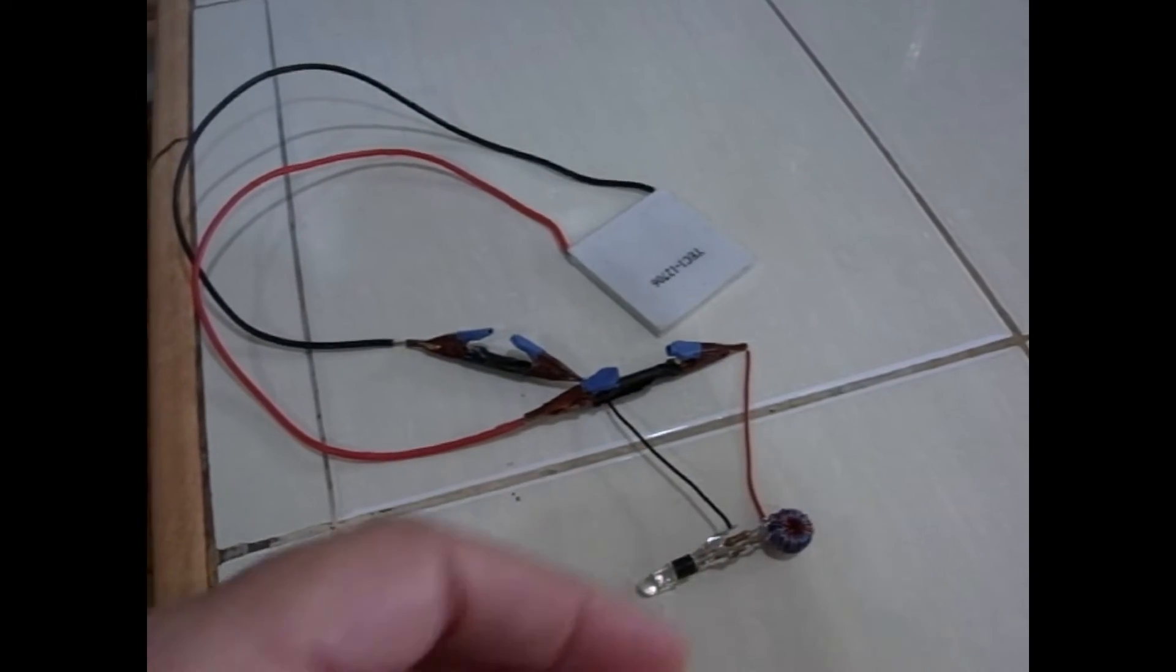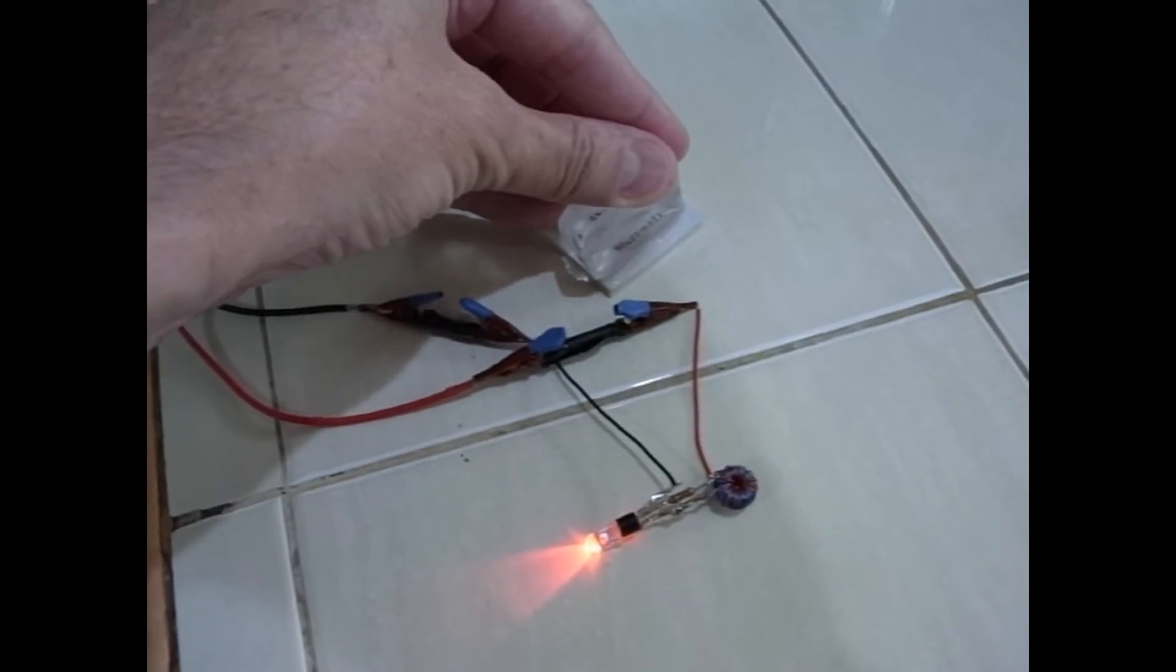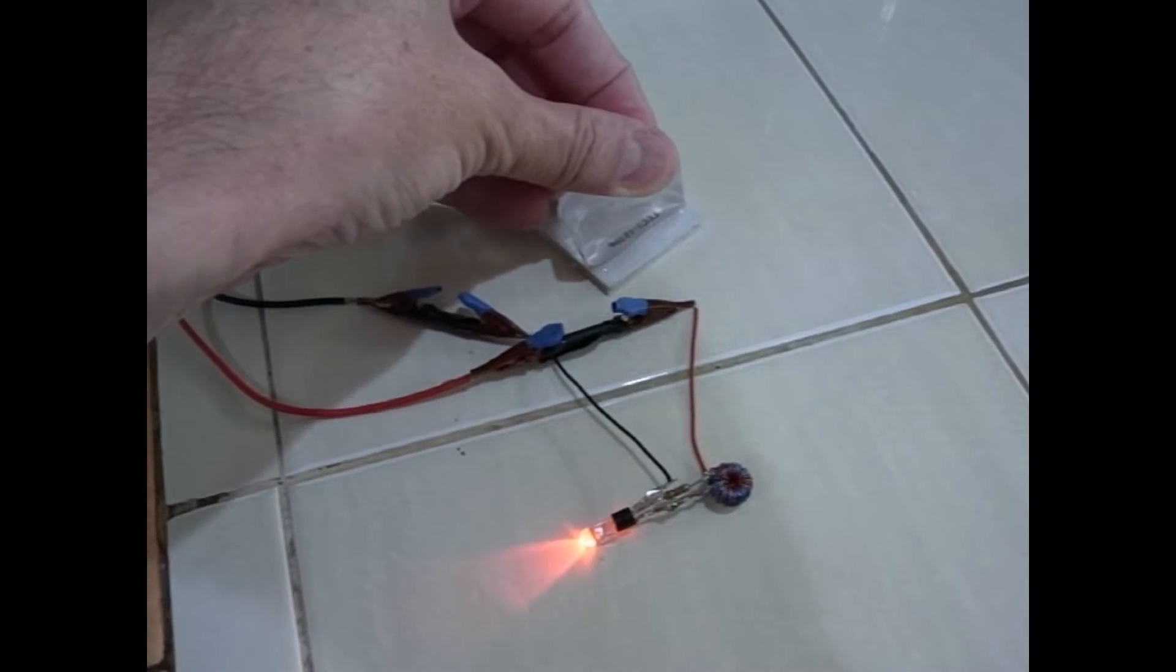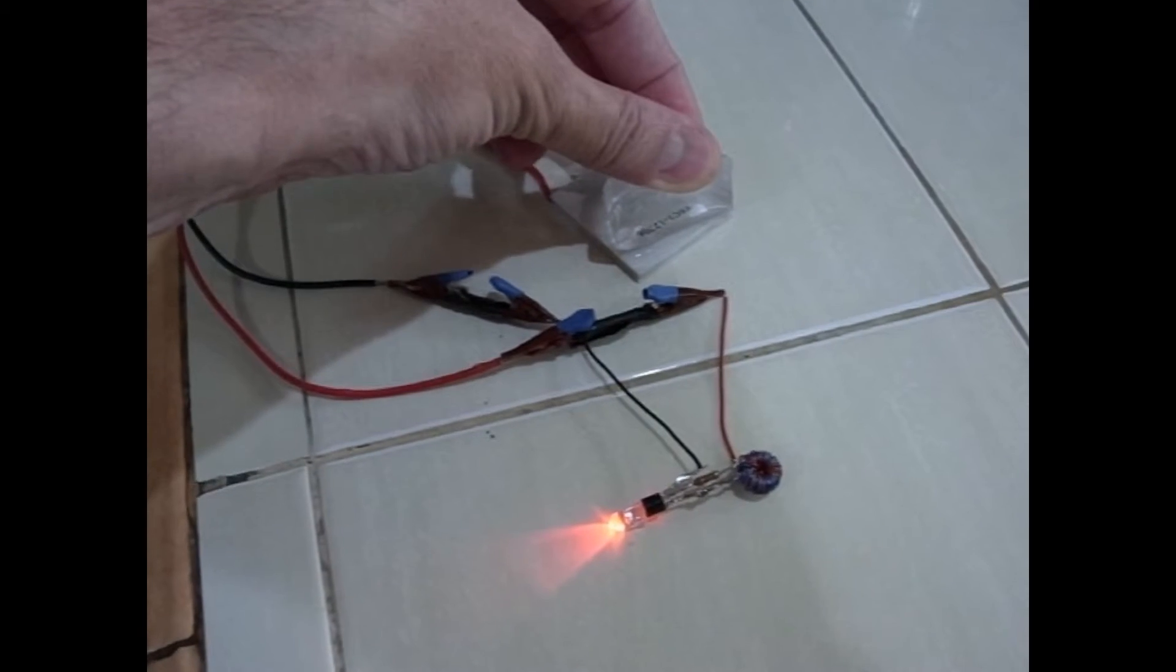And this is our Joule Thief, our Peltier cooler, or Peltier device, and an ice cube. There we go, it'll run until the tile starts to cool off and then it will slow down.